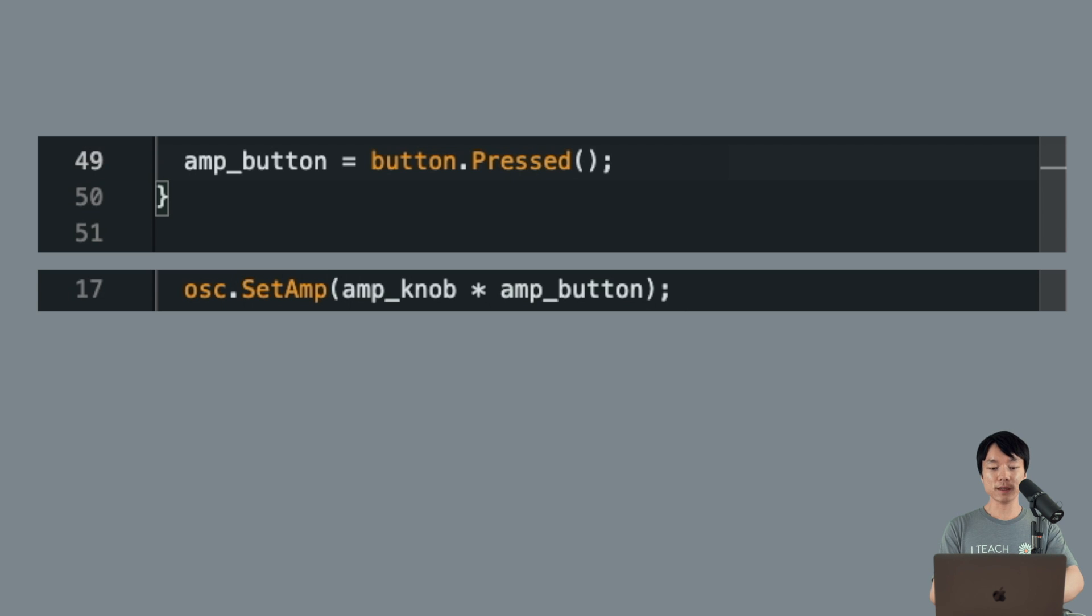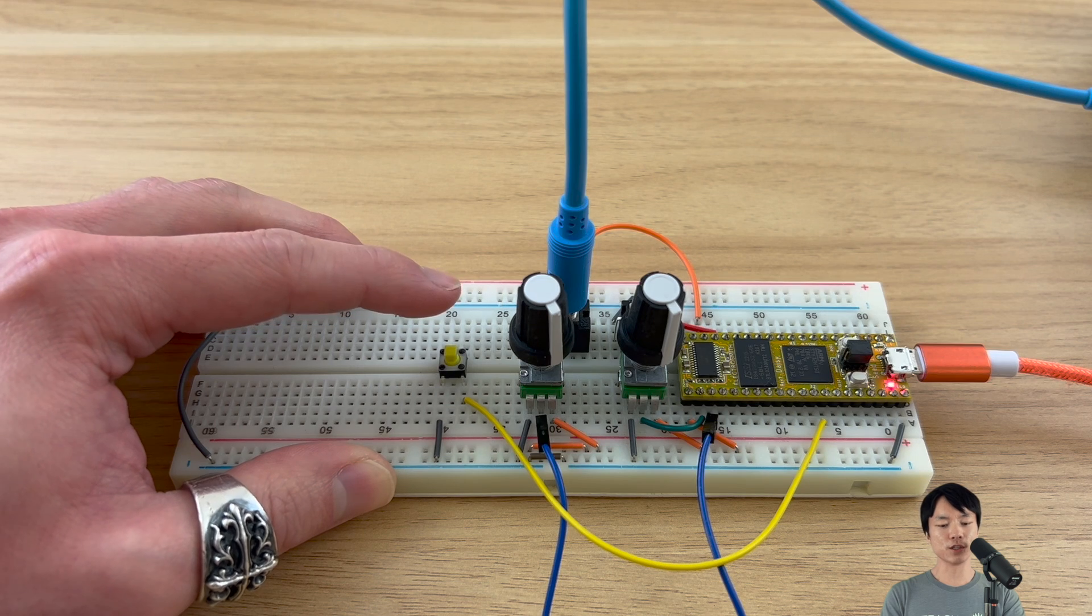So when we press the button, the amplitude of the oscillator tone should be 1 multiplied by the value of the ampNob variable, which I'll turn all the way up to 1.0. And when we let go of the button, the oscillator volume will be 0 or off. Okay, I'll flash the code and show you how it sounds.